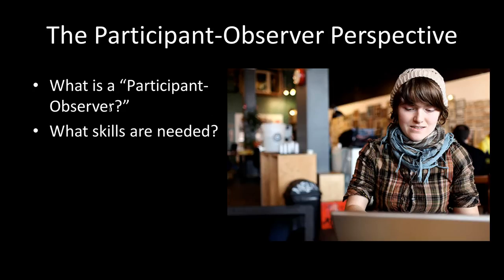The last concept to touch on before wrapping up this chapter is the participant observer perspective. The goal of this class is for you to join a group and experiment with the ideas and concepts we discuss. To do that effectively, you want to put yourself in what's called a participant observer perspective — a combination of engaging and participating in activities while retaining the ability to step back and observe and reflect on those things. The skills you need for this are being a good listener, paying attention, taking notes when necessary, and making sure you are engaging with other group members.